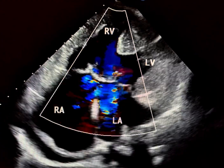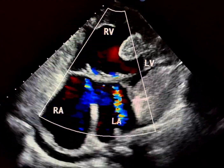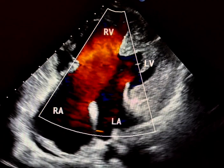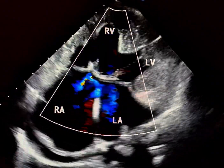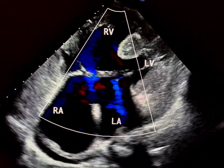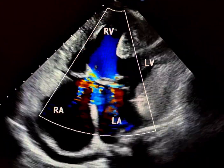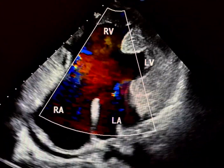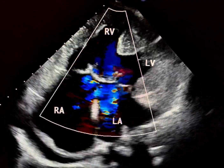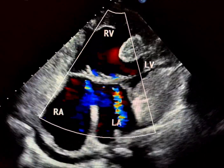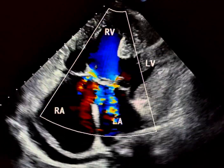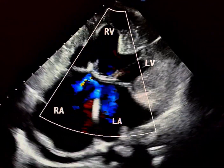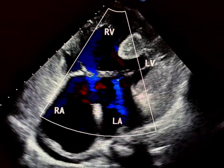There are three main types of AVSD. Complete AVSD includes a common AV valve with both an ASD and VSD. Partial AVSD usually has only an ASD present with a cleft mitral valve. And transitional AVSD involves an ASD with a small VSD and two separate AV valves but with abnormal attachments.